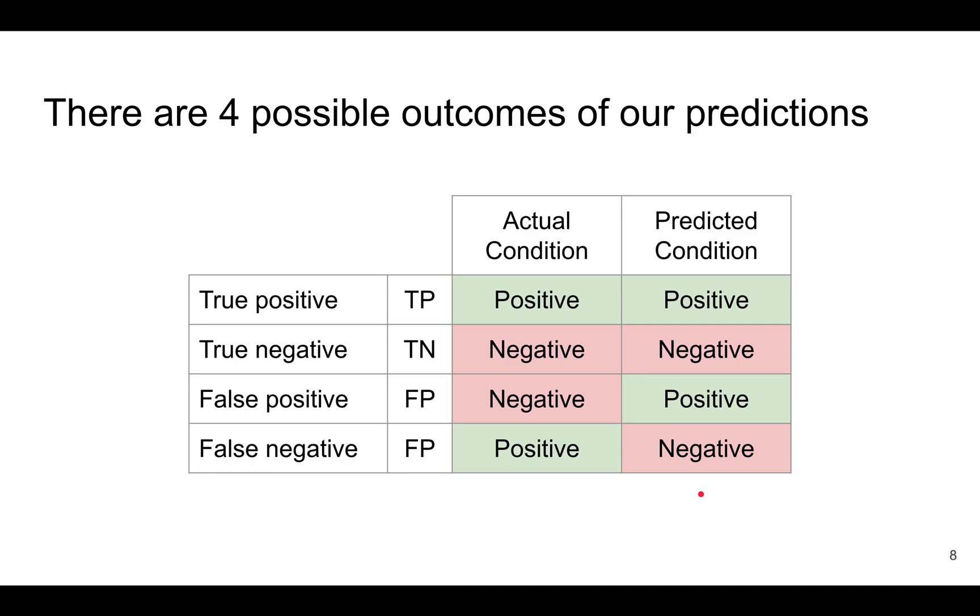You can see that there are four possible outcomes of your predictions. These are basically all possible pairs of the actual condition and the predicted condition.